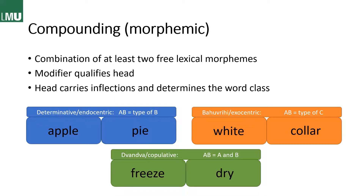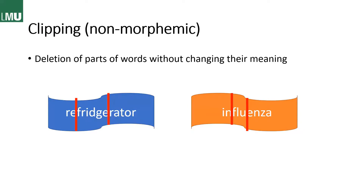And then we have the dvandva or copulative compound, where AB is both A and B. The example here is 'freeze-dry,' which is a process where you freeze and dry something in the same step or in one go. Now we get to the non-morphemic word formation patterns. We have clipping, which basically means we delete parts of words without changing their meaning. A very prominent example is 'refrigerator,' which most people talk about as 'fridge' — still the same word, still the same meaning, just much shorter. And the same goes for 'influenza,' which everybody refers to as 'the flu.'